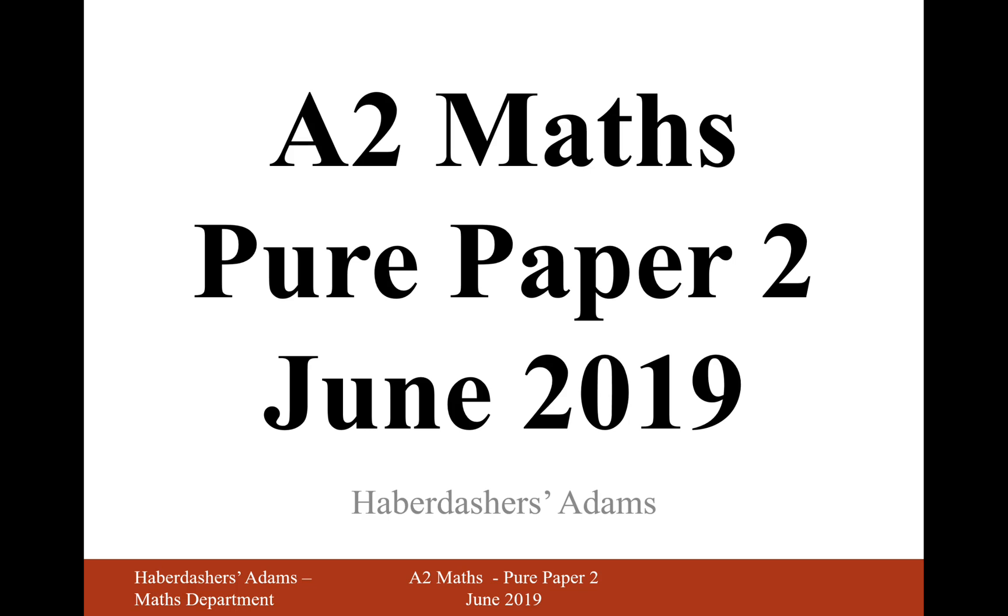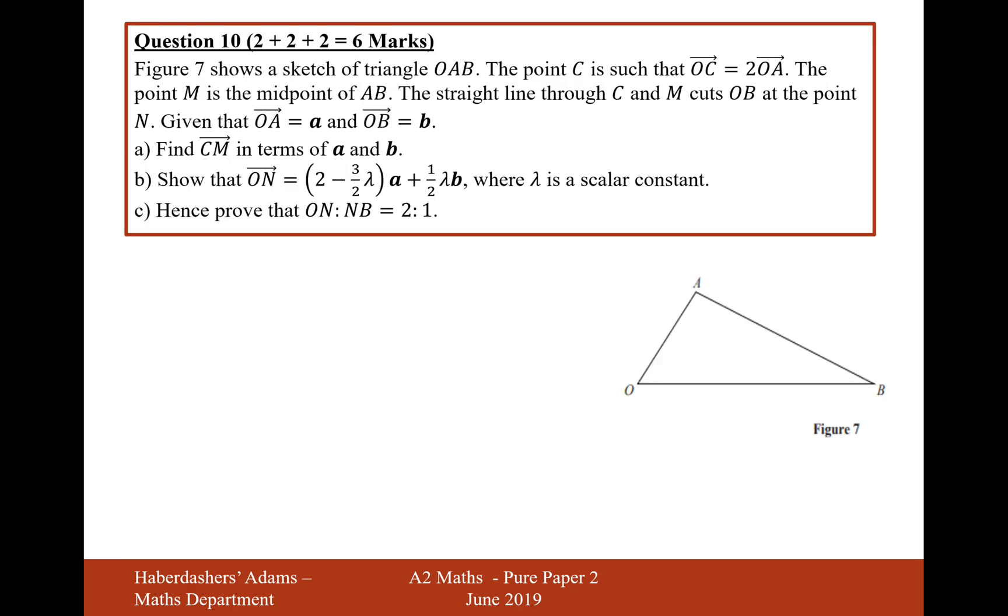Hello there and welcome to the June 2019 paper. We're on paper 2 and here we're looking at question 10. So figure 7 shows a sketch of triangle OAB. The point C is such that OC equals 2 lots of OA. Let's add that onto the diagram first. So OC equals double OA.